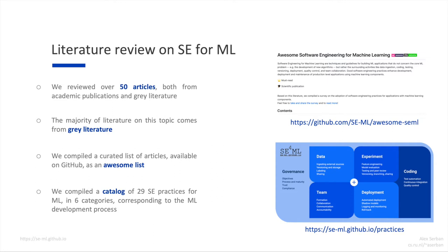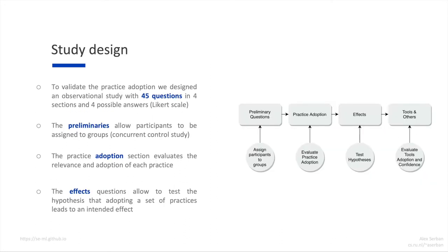To validate the practice adoption, we designed a questionnaire aimed at teams of developers who develop software with machine learning components. The study was designed as an observational study, which means that participants were asked at the moment of taking the questionnaire if they adopt any of the practices we defined. The questionnaire had a total of 45 questions divided into 4 sections. The answers were on a Likert scale with 4 possible types, designed to measure the degree of adoption of the practices rather than the degree of agreement of the participants with the practices. The first section contained questions about the background of the participants, which allowed us to assign them to groups, making the study a concurrent control study.